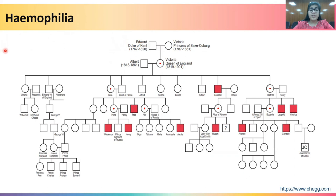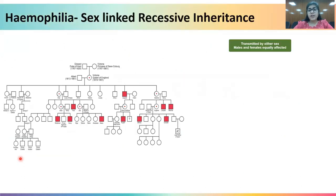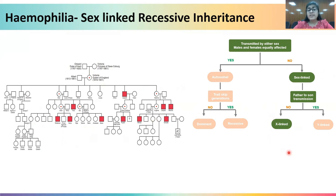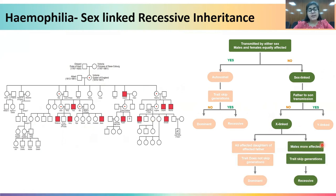A famous parallel example is the pedigree of the royal European family of Queen Victoria, in which hemophilia is inherited across multiple generations. Through the logical flowchart, the trait is not transmitted by either sex equally, males and females are not equally affected, there is no father-to-son transmission, males are more affected, and the trait skips generations — all confirming this is a pedigree showing X-linked recessive inheritance.